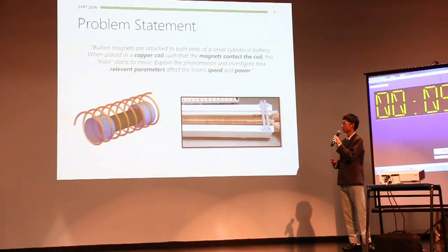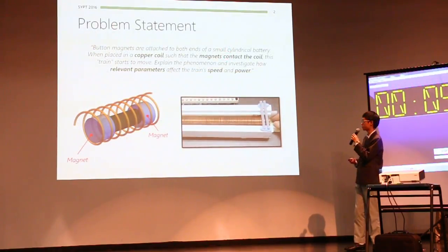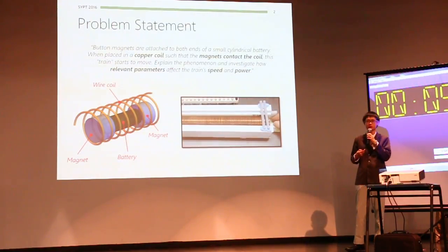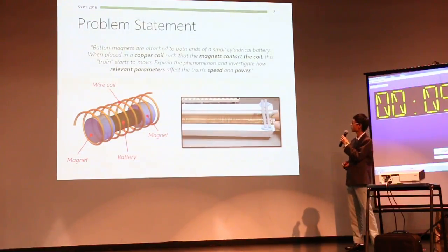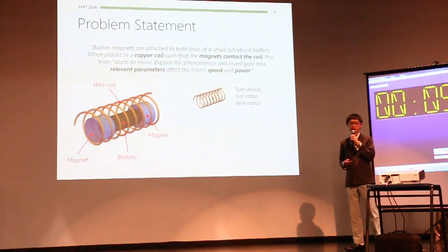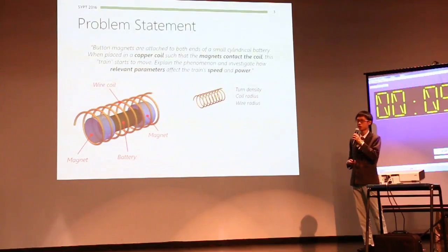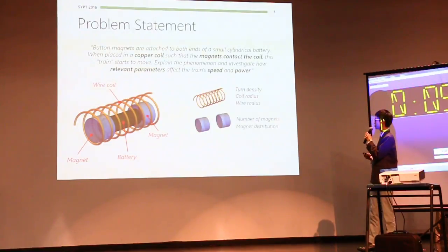We can first see from the question statement that we're supposed to attach magnets to both ends of a battery and place this train inside a wire coil. And this train will then move, and we're to investigate its speed and power. The relevant parameters to this question involve the physical parameters of the wire coil, such as the turn density, the coil radius, and the wire radius, and also the train itself, for instance, the number of magnets and the battery voltage.